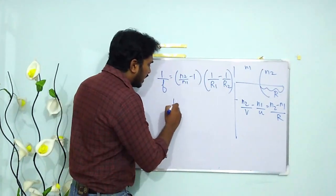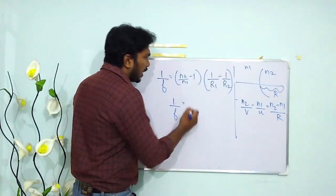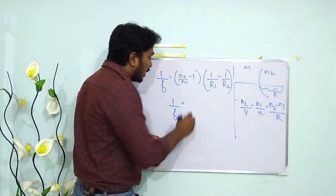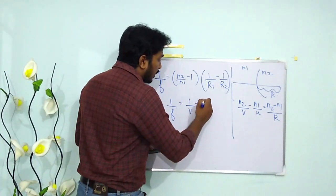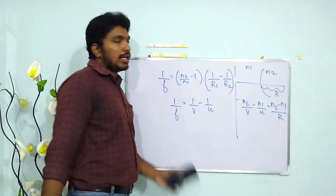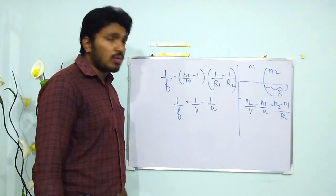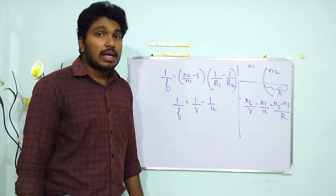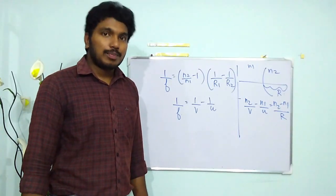Please also remember the thin lens formula: 1/F = 1/V − 1/U.